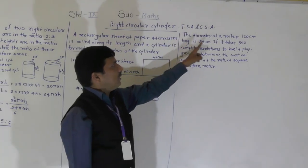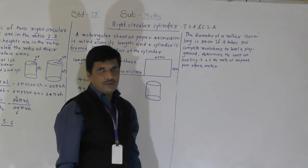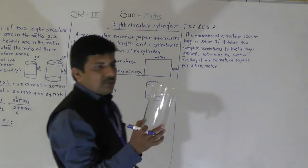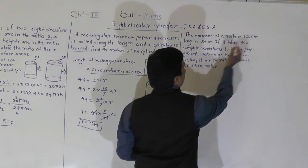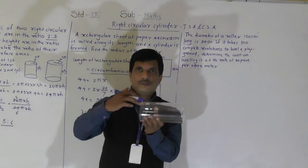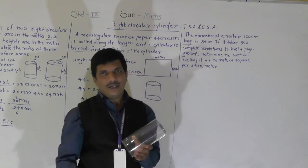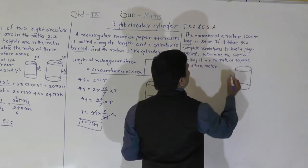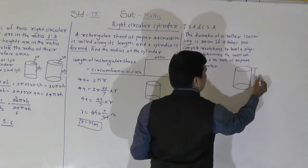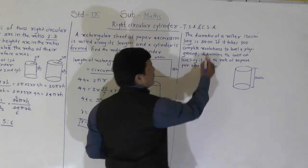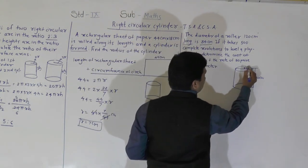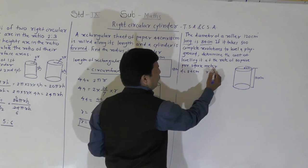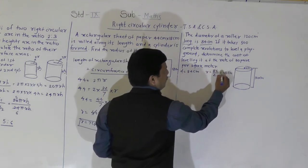The next problem: the diameter of a roller 120 cm long is 84 cm. The length of the roller is its height, so h = 120 cm. The diameter D = 84 cm, so the radius r = 84/2 = 42 cm. If the roller takes 500 complete revolutions to level a playground, we need to determine the cost of leveling at the rate of 30 paise per square meter.